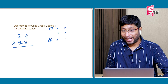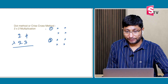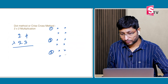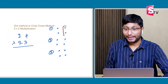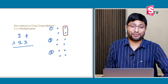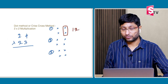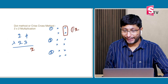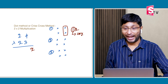Before you understand the concept, write down the steps for the dot method. Step 1: multiply units place into units place. 4 × 3 = 12. Write down the 2 here, and 1 will be the carry.